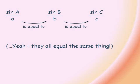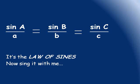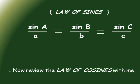They all think of the same thing: sine A over a equals sine B over b equals sine C over c. That's the law from the side — now sing it with me. Sine A over a equals sine B over b equals sine C over c.